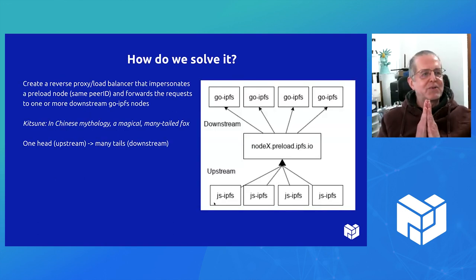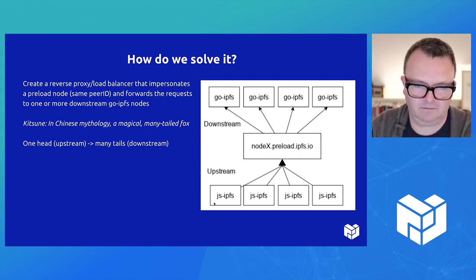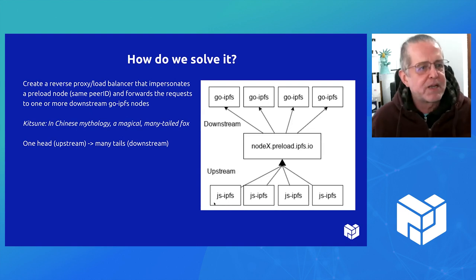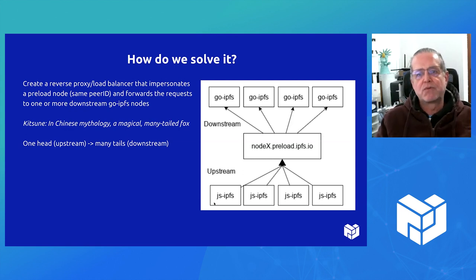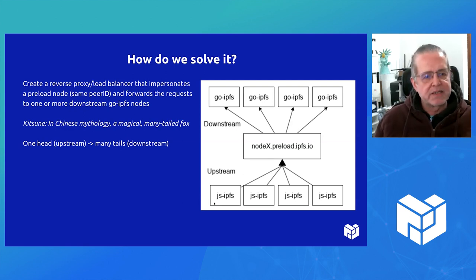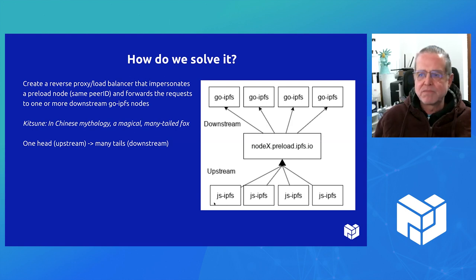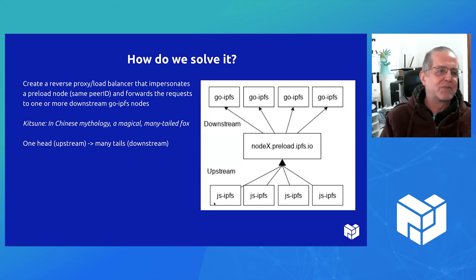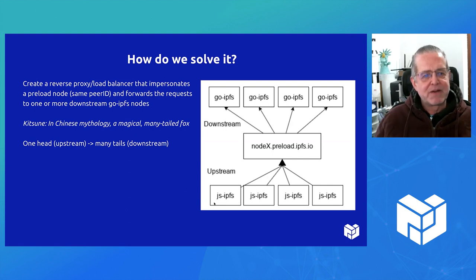So how do we solve this? We basically do a man-in-the-middle attack — we create something like a reverse proxy. That's the way you scale things in Web2. Let's grab a page from the Web2 playbook and create a reverse proxy and load balancer which would impersonate the node — basically take over its peer ID, its private and public keys. It uses a bunch of GoIPFS nodes in the background downstream to actually get the data. I called it Kitsune, which in Chinese mythology is the magical many-tailed fox. So it's one head, where the upstream JSIPFS nodes connect to, and many tails, where the other GoIPFS nodes are.